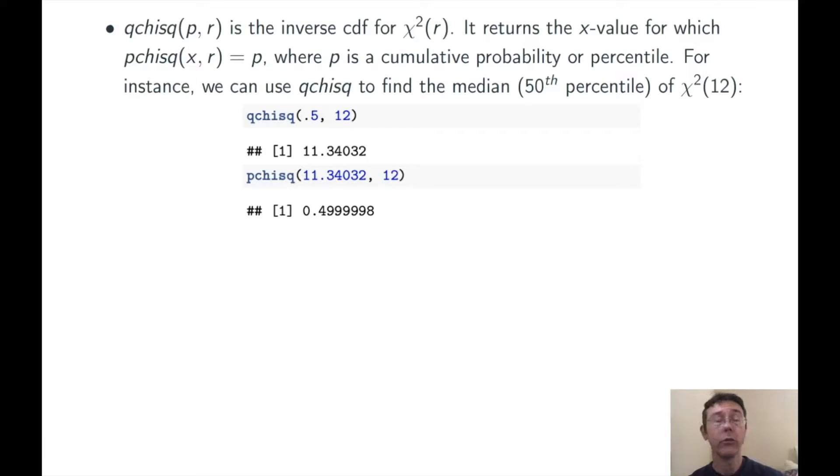So this really is just reversing the process of pchisq, and the second line here is verifying that. I take the x value that I got out of the qchisq command in the previous line, put it in as my input here, and the output is about 0.5.